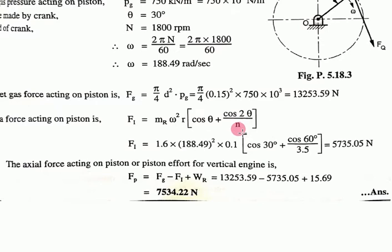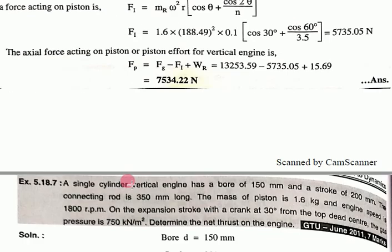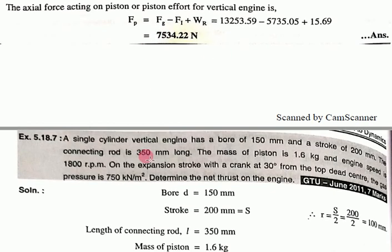Total piston force Fp = gas force - inertia force + weight of reciprocating mass. Gas piston force is calculated by this method.